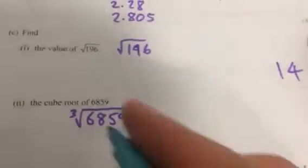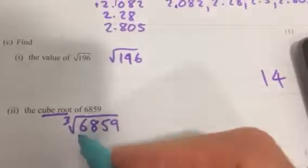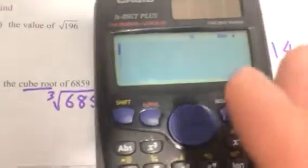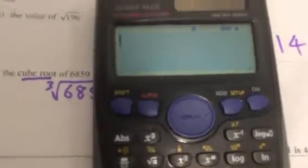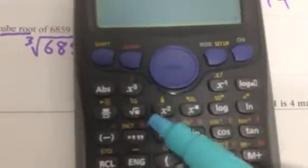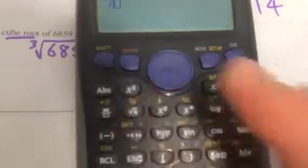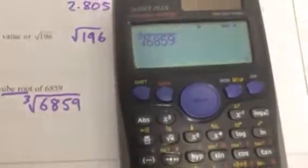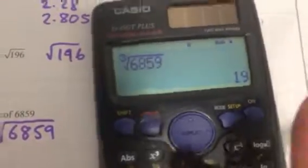And then we'll work out the cube root. Now the cube root, we can rewrite like that symbol of 6,859. So we've got a Casio like this one. You've got the cube root button there. We've got to do shift, cube root, and then 6859. Now this is one I don't know, but it's 19.